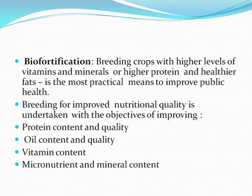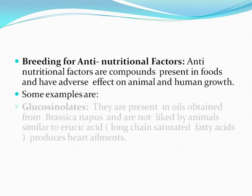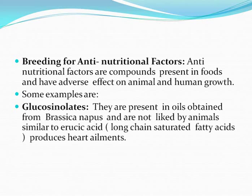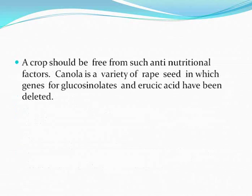Breeding for reduced anti-nutritional factors: anti-nutritional factors are compounds present in foods that have adverse effects on animal and human growth. Examples include glucosinolates, present in oils from Brassica napus, disliked by animals; and erucic acid, which has long-chain saturated fatty acids producing heart ailments. A neurotoxin, beta-cyanoalanine, present in Lathyrus sativus produces muscular cramps and causes lathyrism, a type of paralysis. A crop should be free from such anti-nutritional factors. Canola is a variety of rapeseed in which genes for glucosinolates and erucic acid have been deleted.